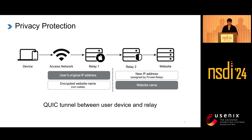The first use case of QUIC tunnel is privacy protection, such as Apple Private Relay, where there's a QUIC tunnel between the user device and the relay. The man-in-the-middle can only see the client's IP address, the encrypted website name, as well as the new IP address and website name. Therefore, the client's IP address and website name cannot be linked.